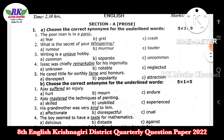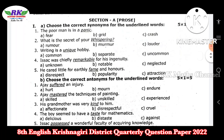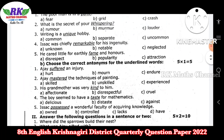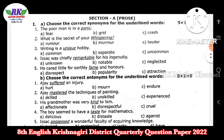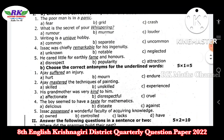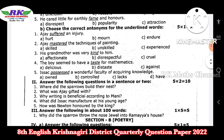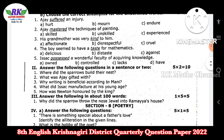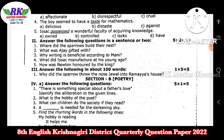So first of all, the first five questions are synonyms — underline the meaning. Next, antonyms, which are opposites. Then, answer the following questions in your own sentences — two sentences each, two mark questions.